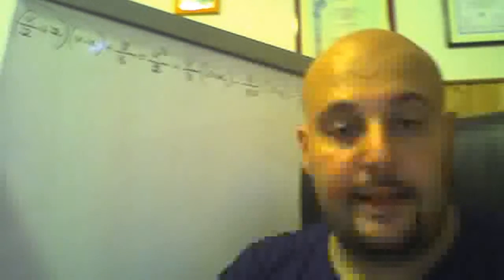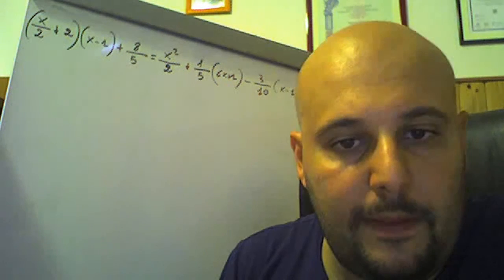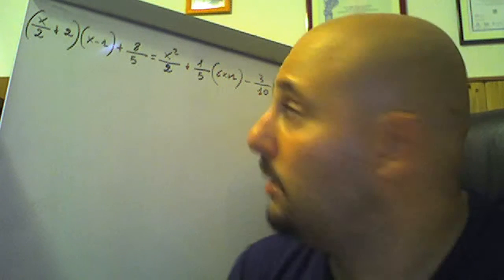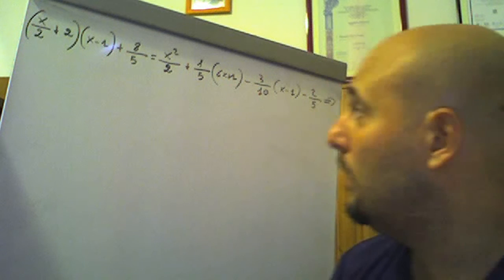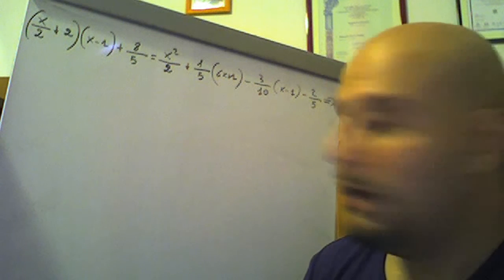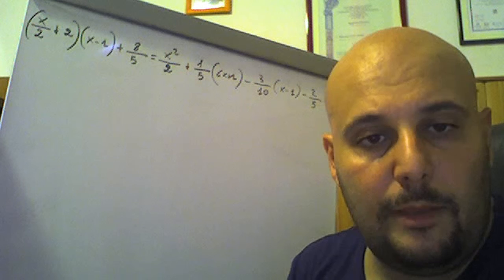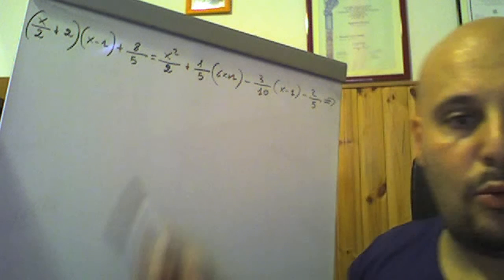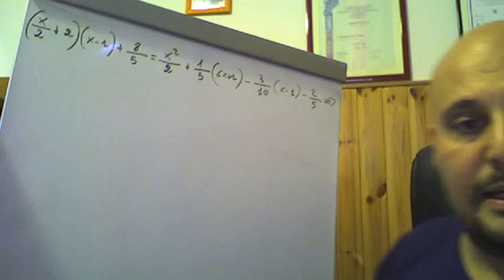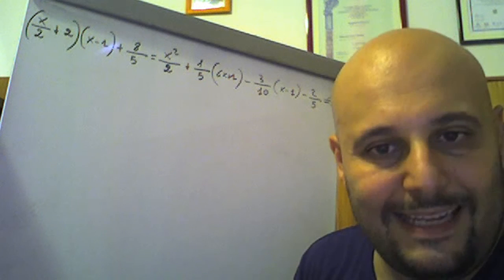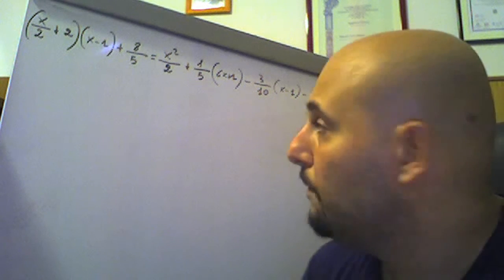Terzo esercizio: (x/2 + 2)(x-1) più 8/5 uguale x²/2 più (1/5)(4x+1) meno (3/10)(x-1) meno 2/5.